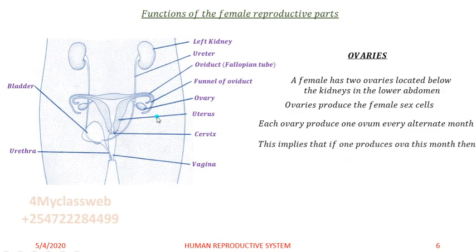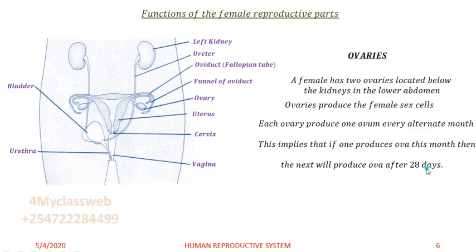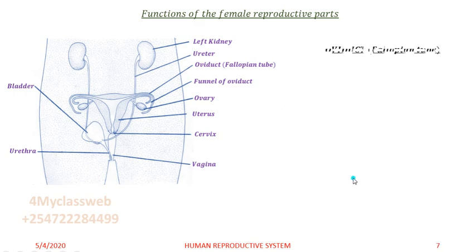Each ovary produces one ovum every alternate month. This means that if one ovary produces an ovum this month, the next ovary will produce an ovum after 28 days. So if this ovary produces this month, next month it will not produce — instead the other ovary will produce the ovum.